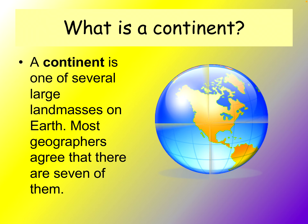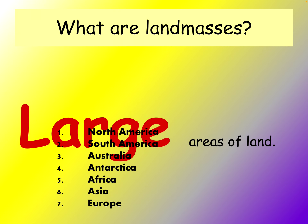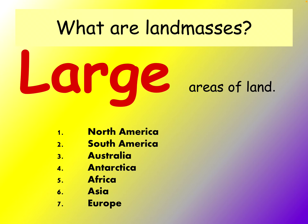A continent is one of the several large landmasses on earth. Most geographers agree that there are seven continents on earth. The emphasis is on large areas of land — larger than islands. The seven continents are North America, South America, Australia, Antarctica, Africa, Asia, and Europe.